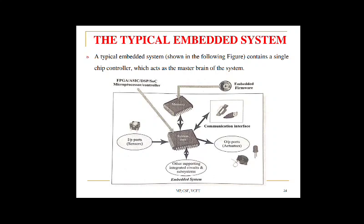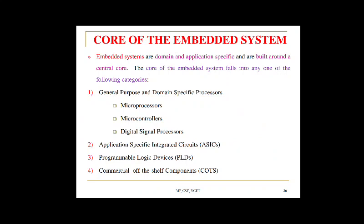In this chapter we will cover controllers, memory, hardware/software, and I/O devices. Embedded systems are domain and application specific and are built around a central core. The core of the embedded system falls into one of four categories: general purpose and domain specific processors, application specific integrated circuits, programmable logic devices, and commercial off-the-shelf components (COTS).